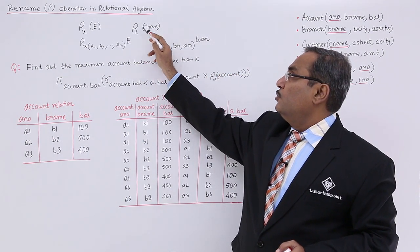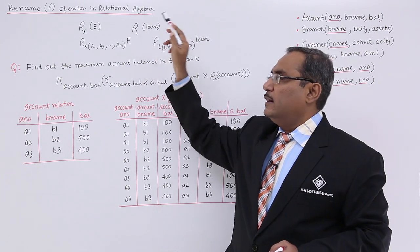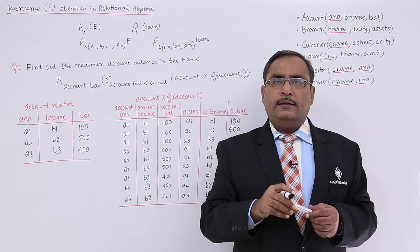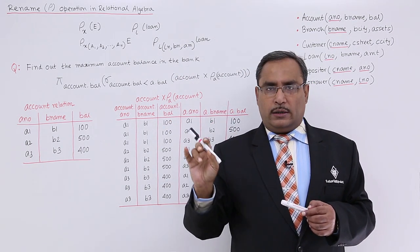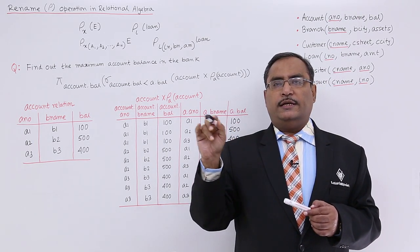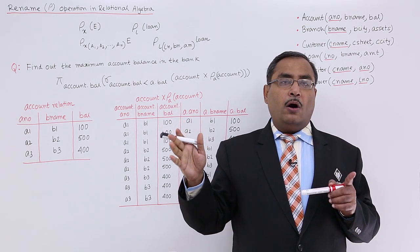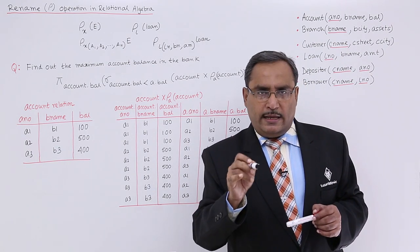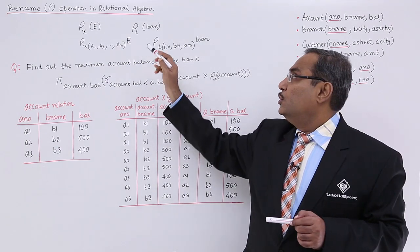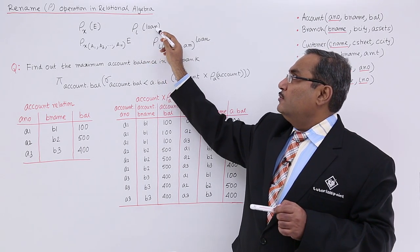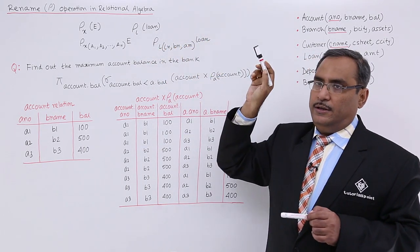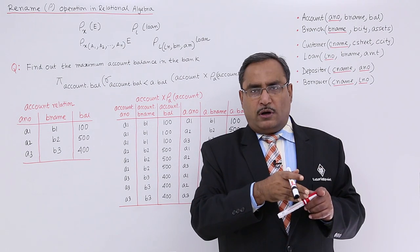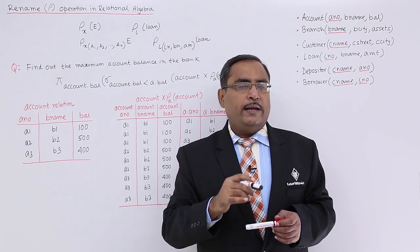The syntax is rho l loan or rho loan l. The purpose is: sometimes a relation name may be very long — say 'accounts of the year 2016-2017'. We can replace it with a single letter A, so we write rho a 'accounts of the year 2016-2017'. For a long relation name, to give it a short name whose scope is confined within the query only, we use rho, the rename operator.